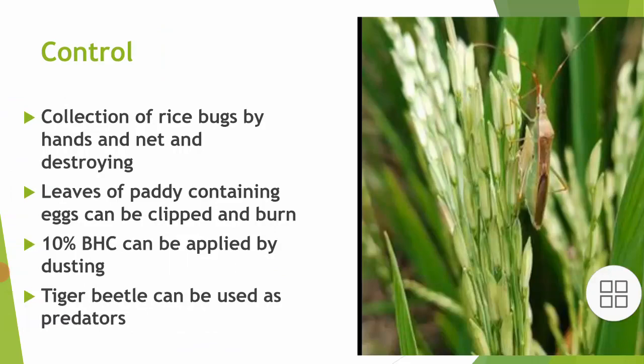Control: Collection of rice bugs by hands and net and destroying them. Leaves of paddy containing eggs can be clipped and burned. 10% BHC can be applied by dusting. Tiger beetle can be used as a biological predator.